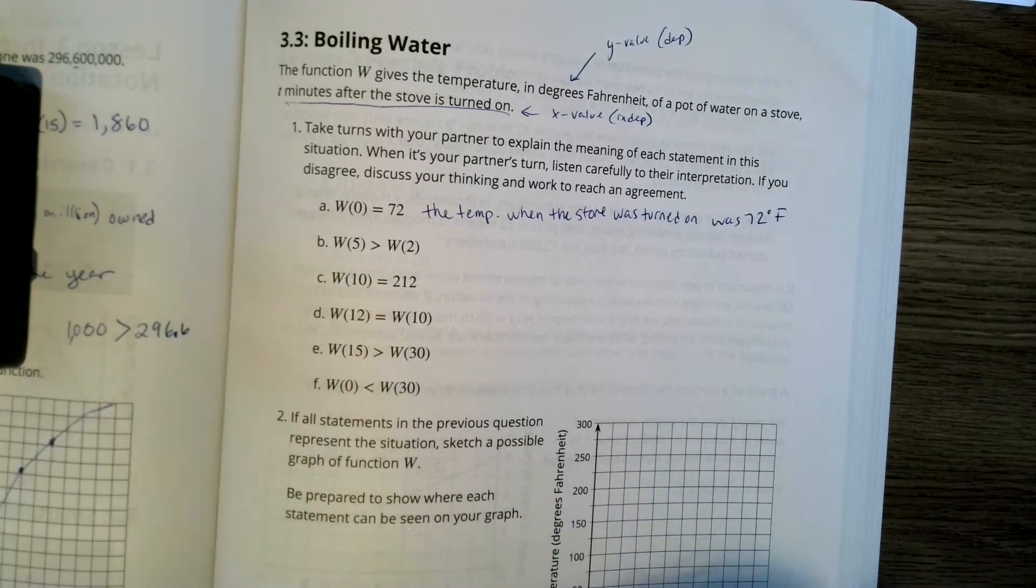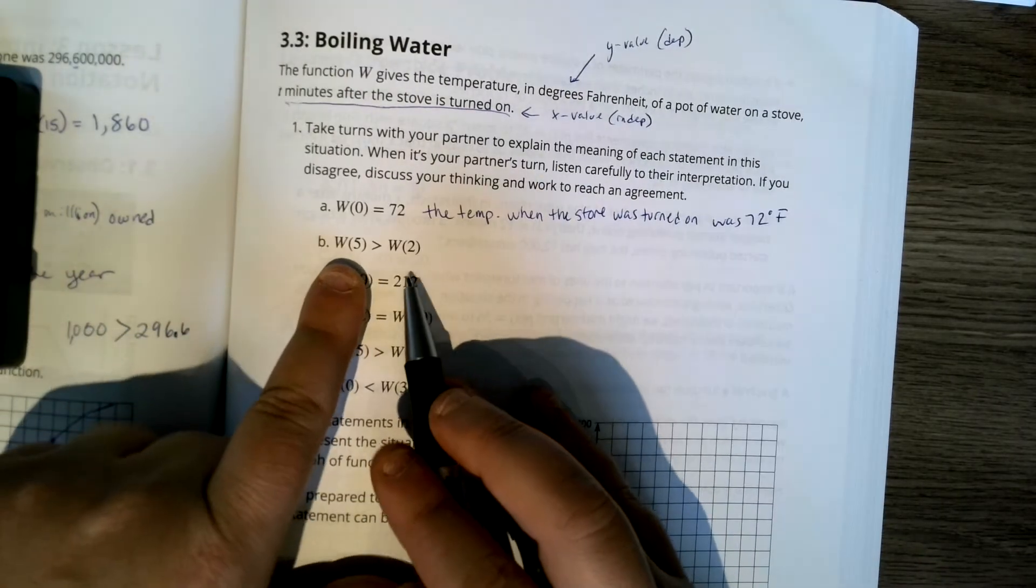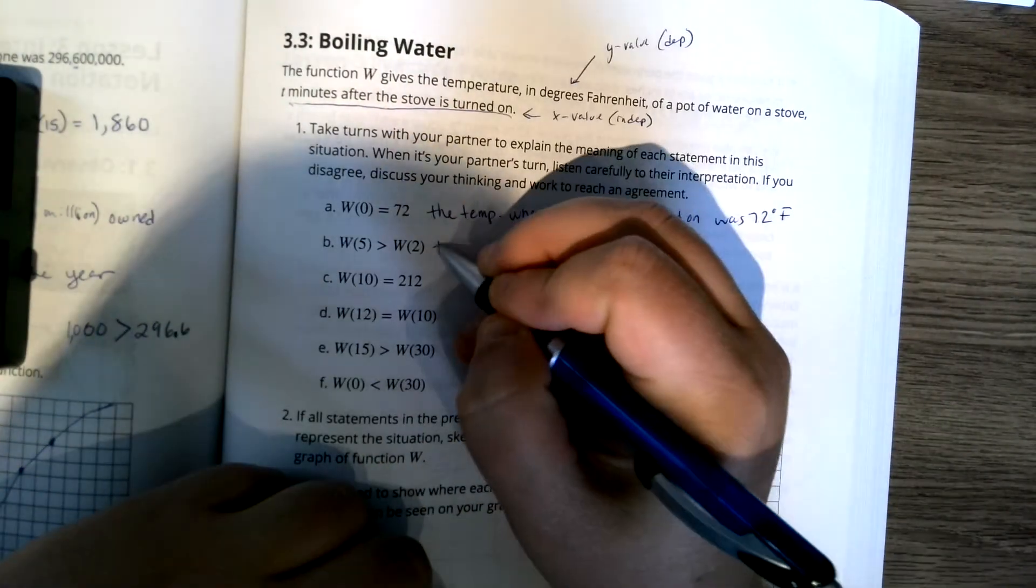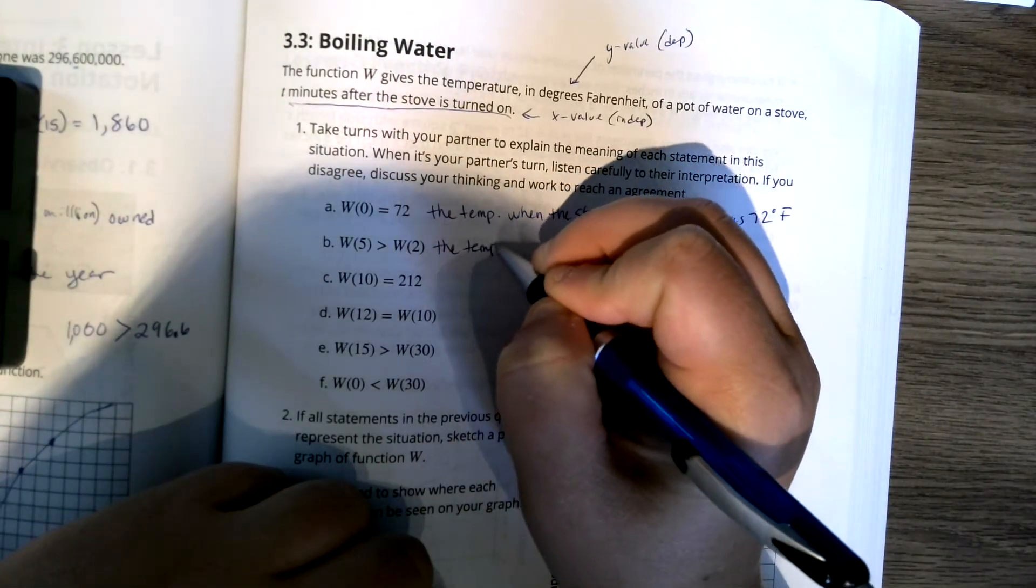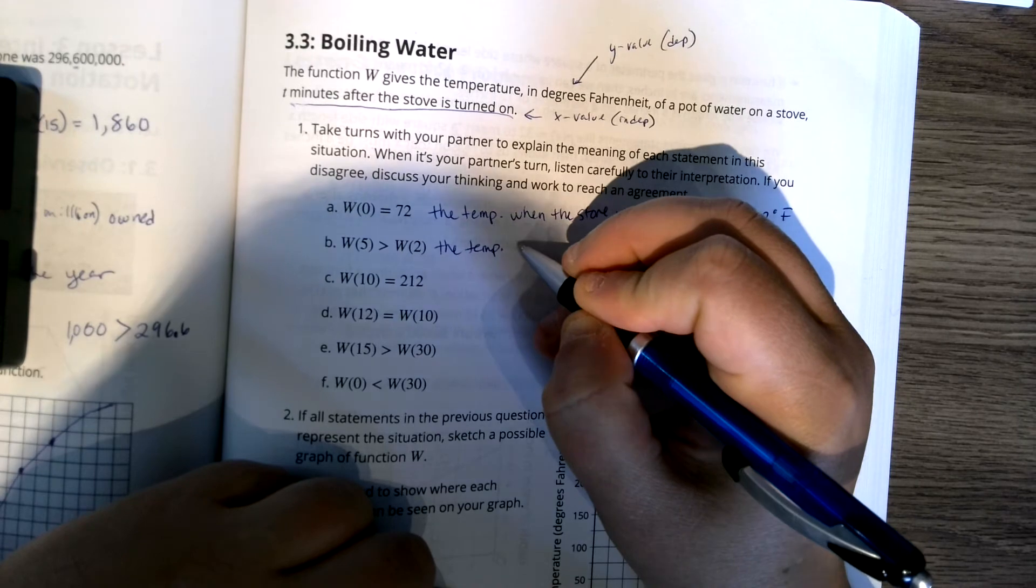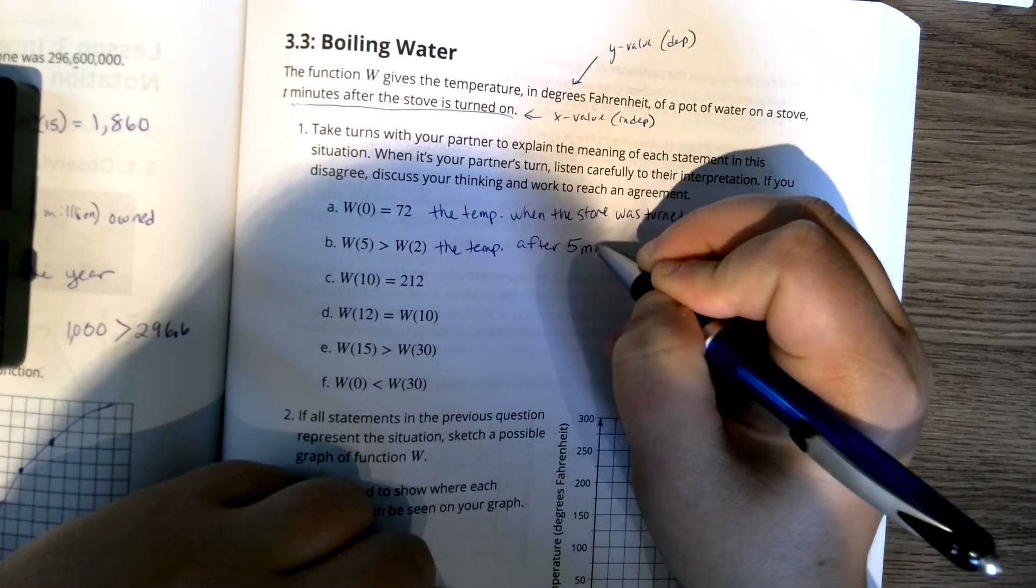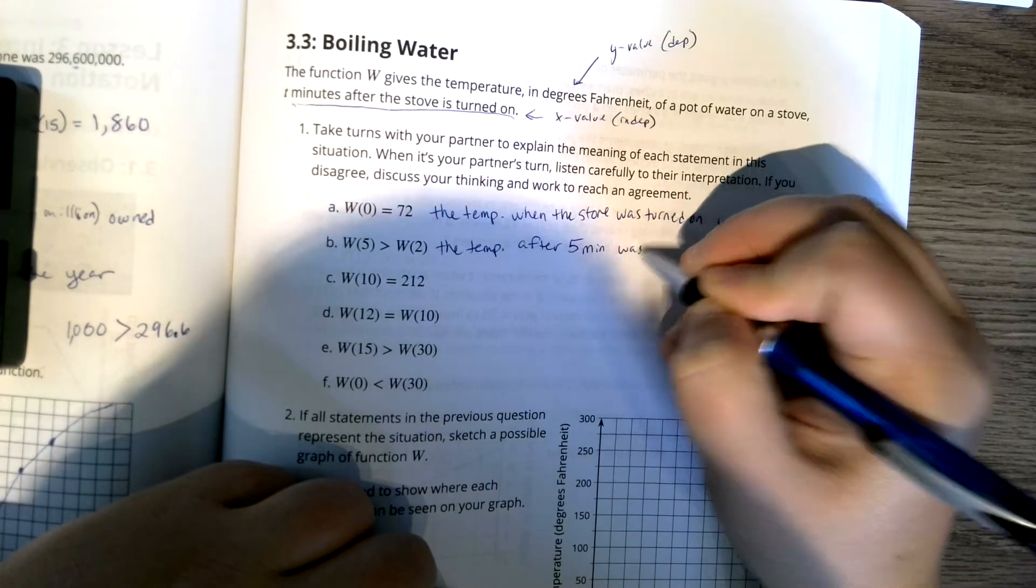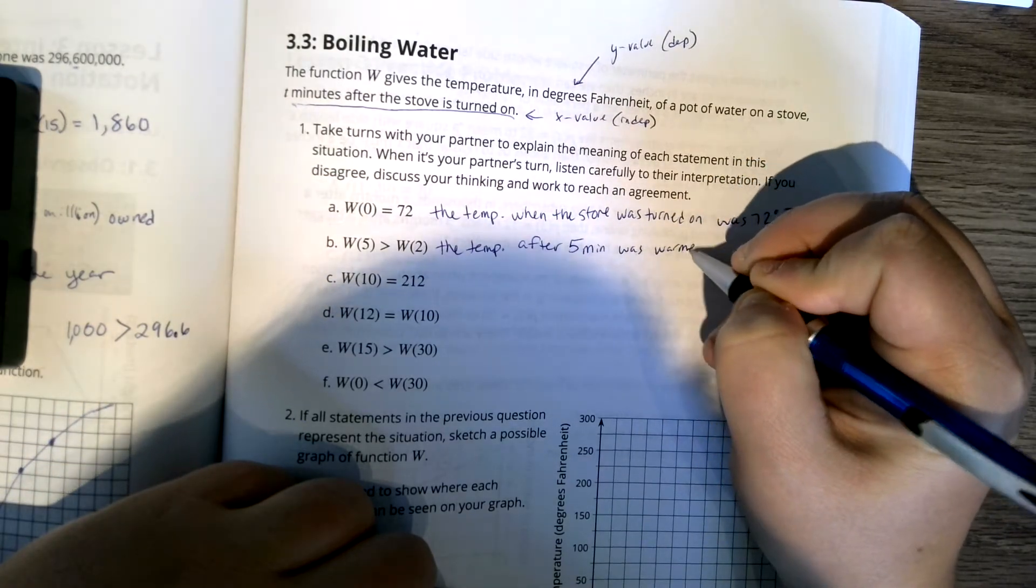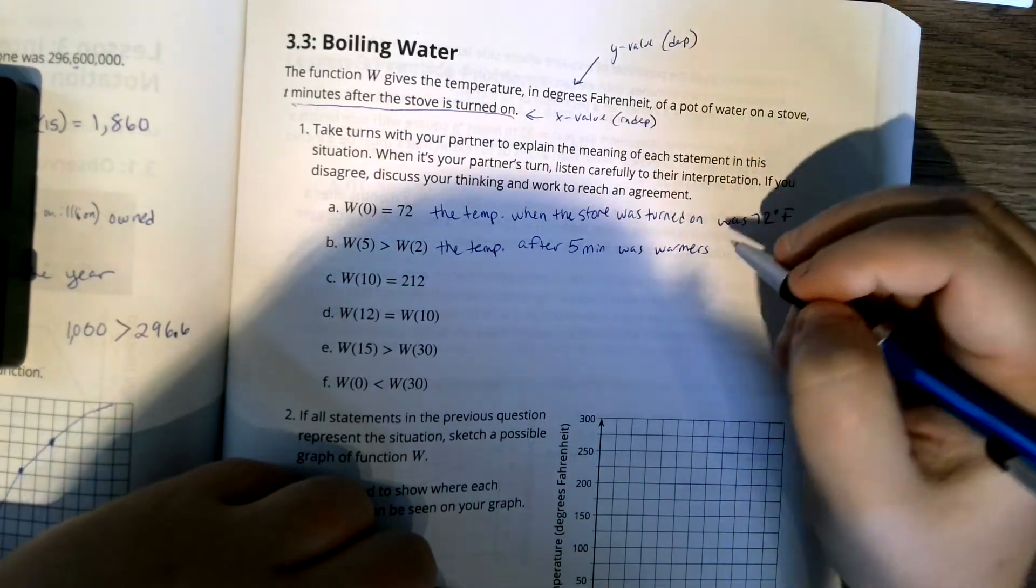The next one says W of 5 is greater than W of 2. Well, remember, what's in the parentheses is our time, so we would say the temperature after 5 minutes was warmer, hotter, whatever you want to use, warmer than temperature after 2 minutes.